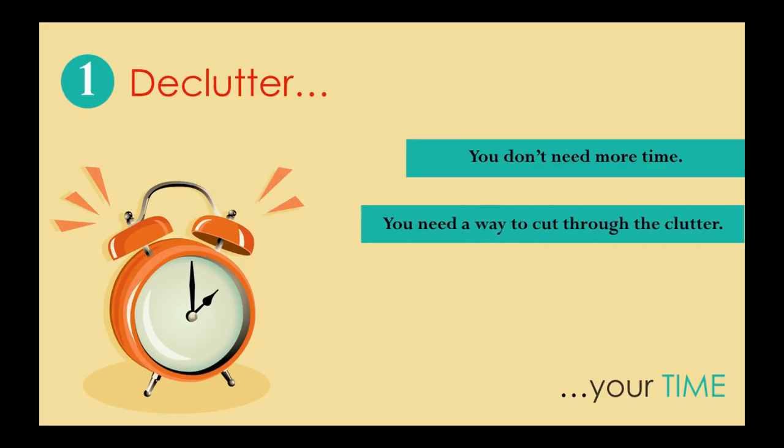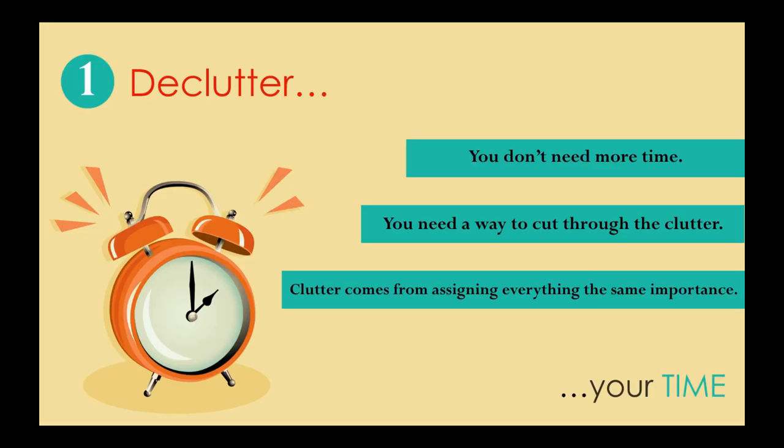We're going to focus on three main areas to create time, and then we'll go into the three ways to do that. Make sure you have downloaded and printed off your time creation strategy sheets because you will use those in part two of this training. The first part to focus on is decluttering your time. A lot of people say they don't have enough time or I'll get to it when I have more time. But the fact is you don't need more time, you just need a way to cut through the clutter. This statement, clutter comes from assigning everything the same importance, literally changed my life.